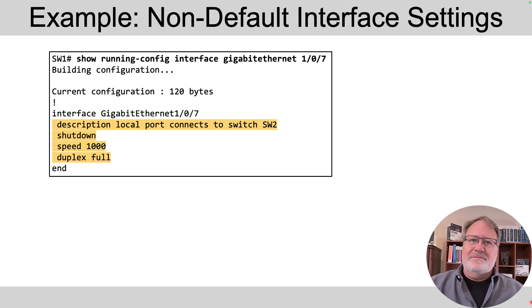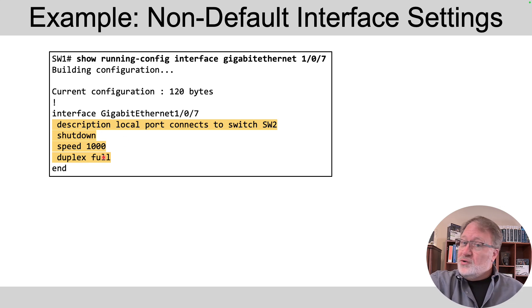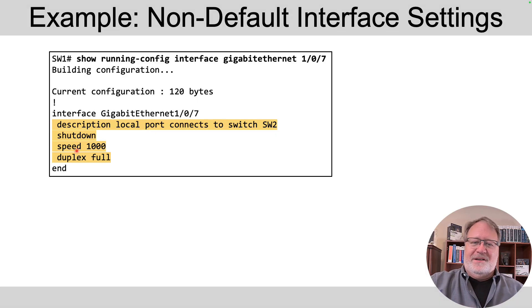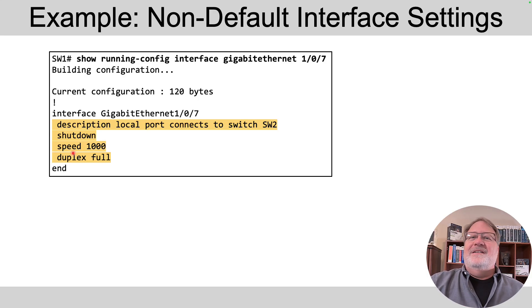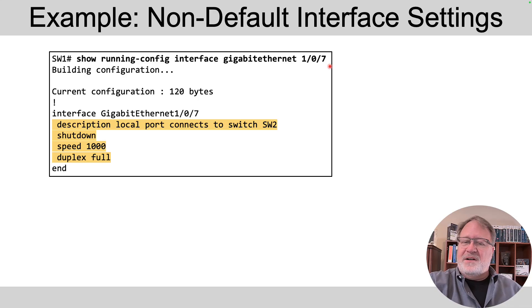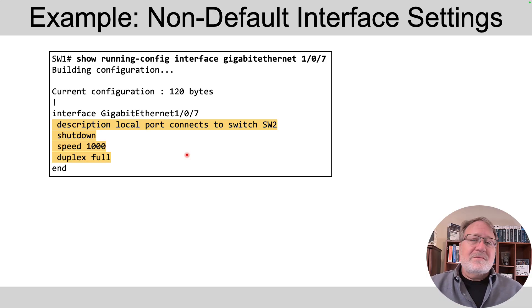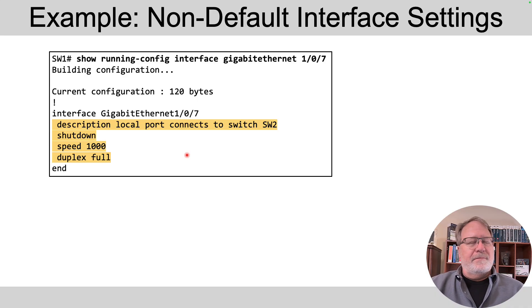Now let's talk about how to revert configuration back to its original state. The description command's default is to have no description. For shutdown, on switches the default is no shutdown — not shut down. We've configured the non-default value, which is the shutdown command. Speed default is auto, duplex default is auto. The 'show running-config interface' command shows these four non-default values. How do you know the default values? From experience — you learn each command and its default, and also get affirmation from IOS itself.